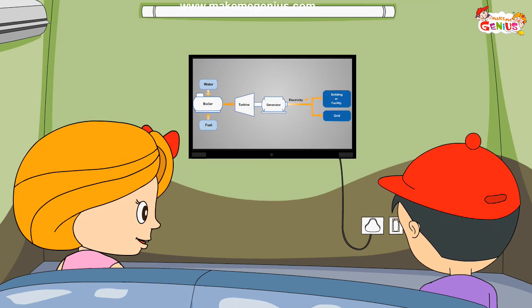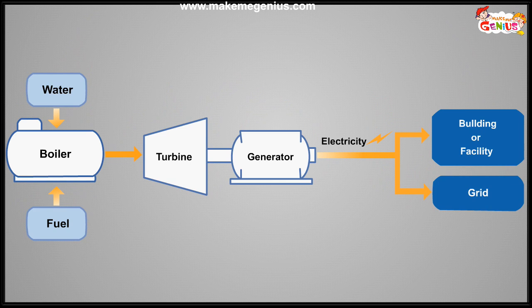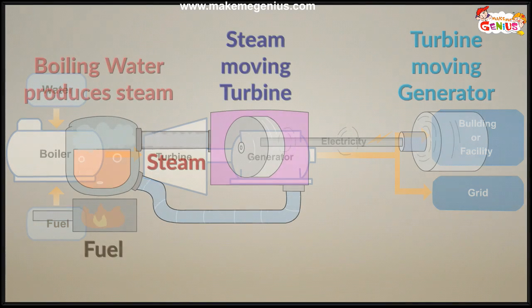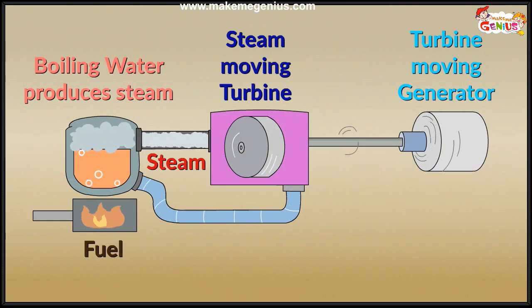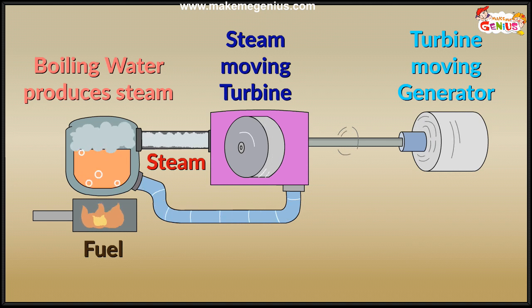In most electricity generating plants, water is put in big tanks, then it is boiled to produce steam, and the turbine is moved with the pressure of the steam — just like a pinwheel. Water is heated until it produces steam, and this steam moves the turbine that spins a shaft connected to a magnet inside the coil of wire.